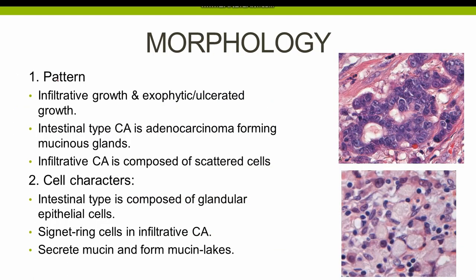Coming to the morphology of gastric adenocarcinoma, gastric adenocarcinoma forms either an infiltrative growth or an exophytic ulcerated growth. Almost 30–40% of gastric adenocarcinomas have an infiltrative growth, whereas the exophytic or ulcerated growth is a feature of the intestinal type of adenocarcinoma, constituting almost 50–60% of all gastric adenocarcinomas.